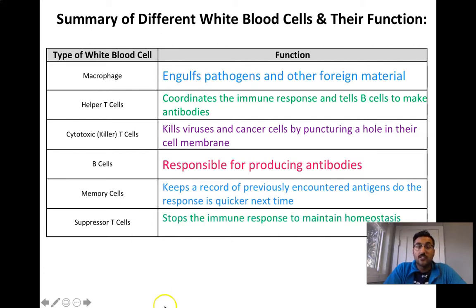And suppressor T cells are going to stop the immune response. And this is to maintain homeostasis or in other words, we don't want the immune response to constantly happen. We have to stop it at some point so that it doesn't keep going.